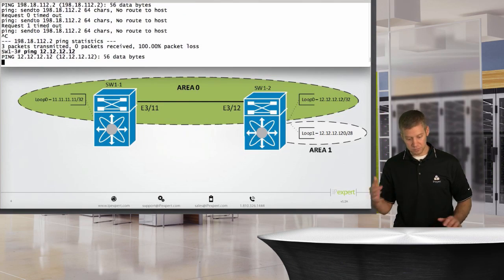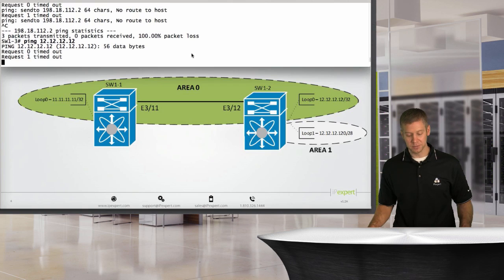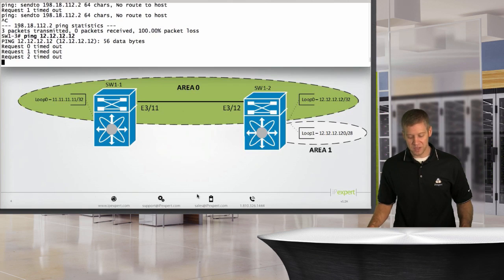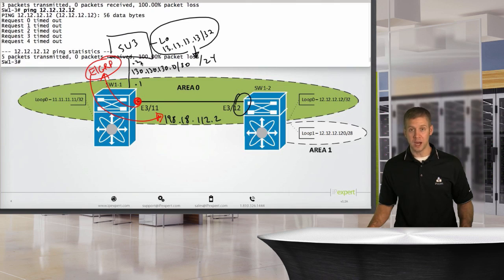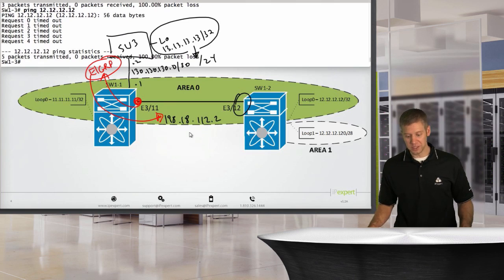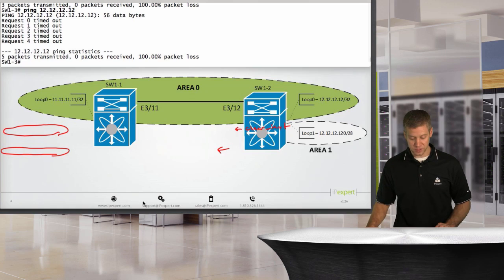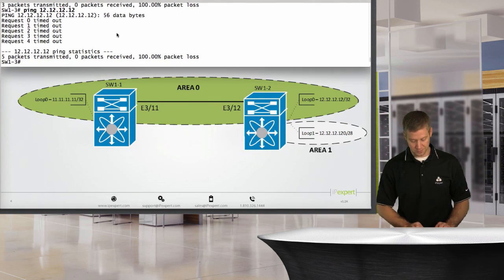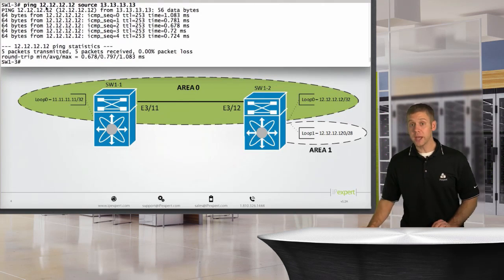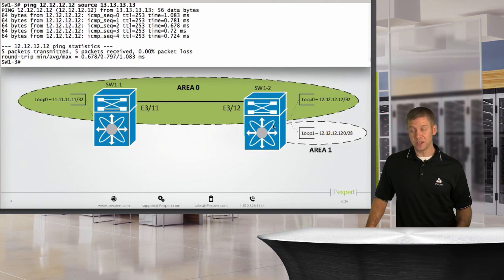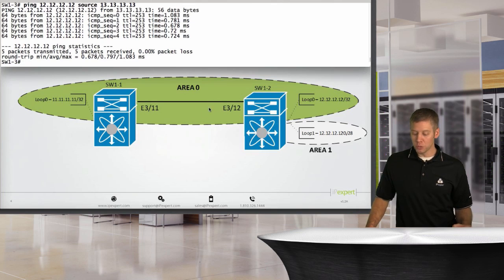If I try to ping 12.12.12.12 right now I'm not getting anything back, because I'm sourcing from my 130.130.130.2 IP address - the closest to the destination - and switch one doesn't have a route back to that. But if I source it from my loopback 13.13.13.13, I do get a response, because switch one has done the redistribution and has a route back to my loopback.